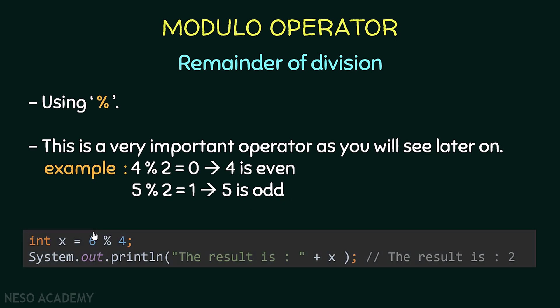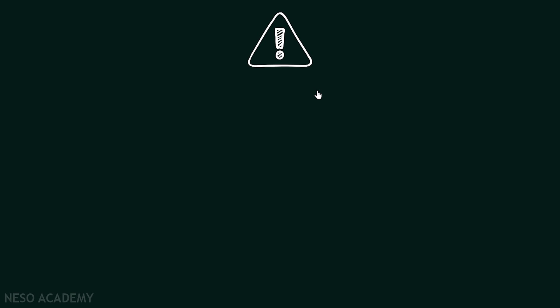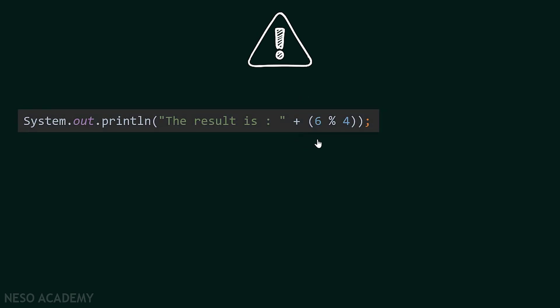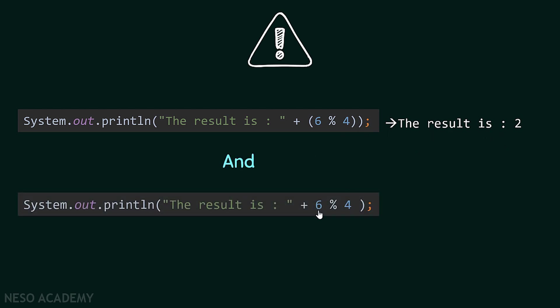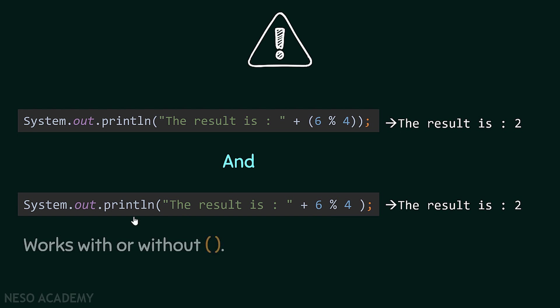Here's a code example: we have an integer x equal to 6 modulo 4, and we are printing x. The remainder of the division of 6 by 4 is equal to 2. Also, we can display the result directly using parentheses, and we will see the result is 2. We can also use it without parentheses and get the same result — so it works with or without parentheses.